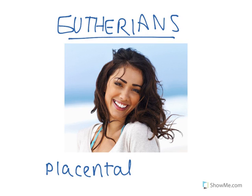Eutherians don't give birth until the child is fully capable of living on its own, which is different from marsupials because marsupials give birth to their young much earlier and then allow them to continue developing within the pouch. Alternatively, eutherians give birth to their young once they are ready, much like humans give birth to babies once they're ready to enter the world.